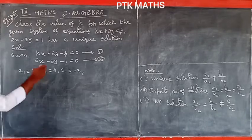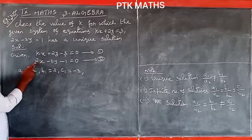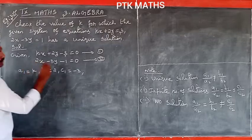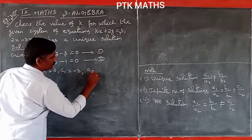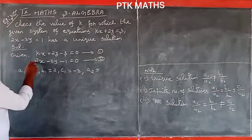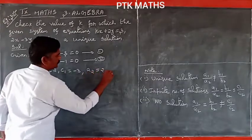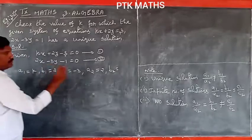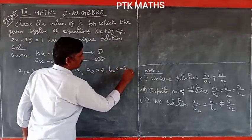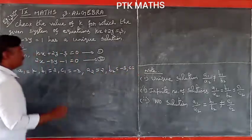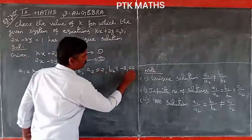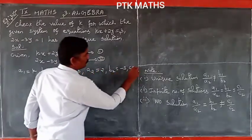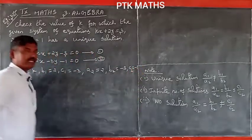From the second equation, a2 is the coefficient of x, which equals 2. b2 is the coefficient of y, which is minus 3. c2 is the constant of the second equation, which equals minus 1.